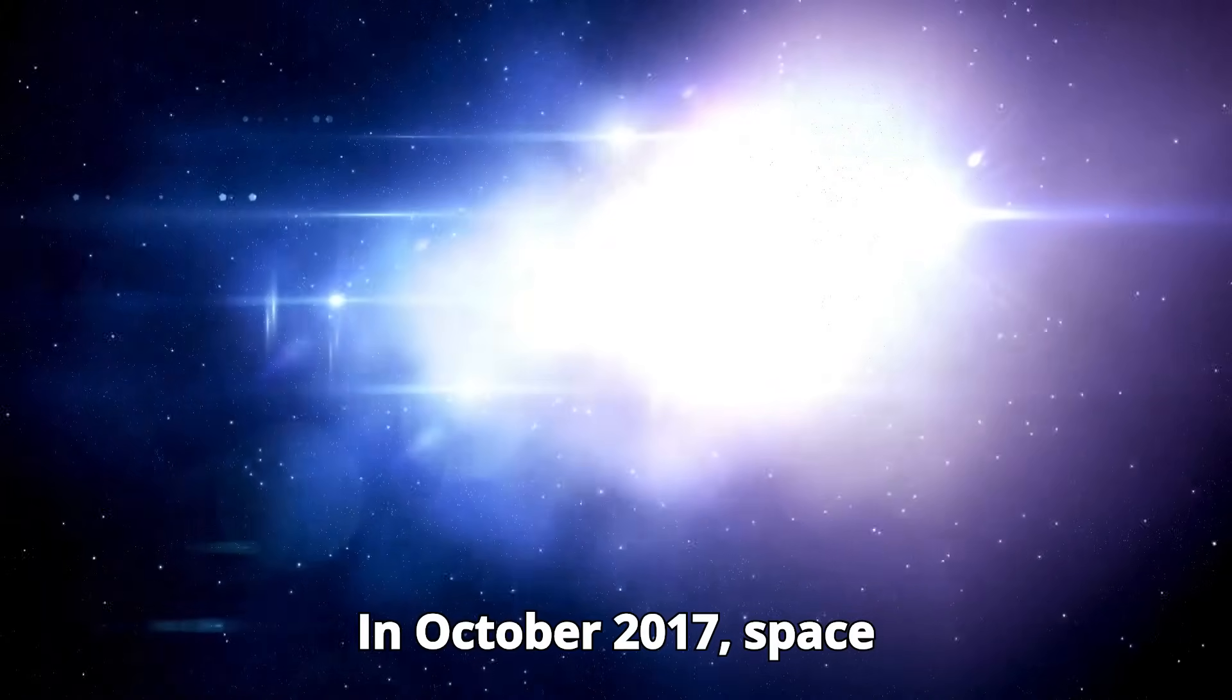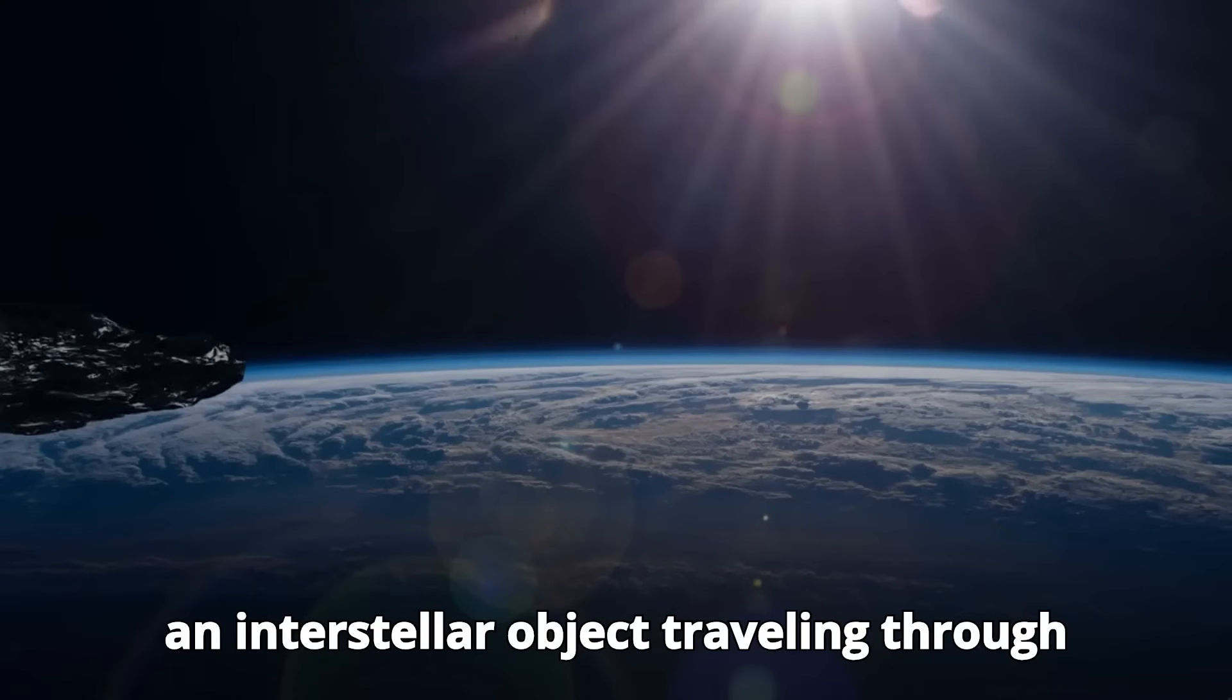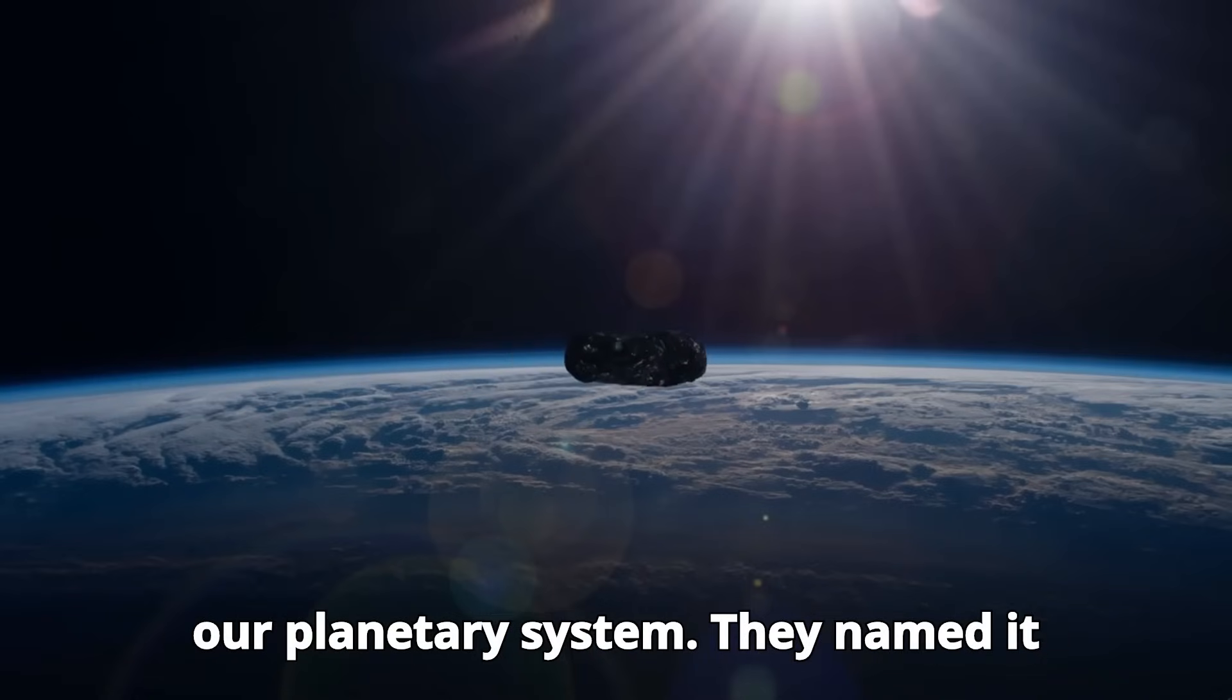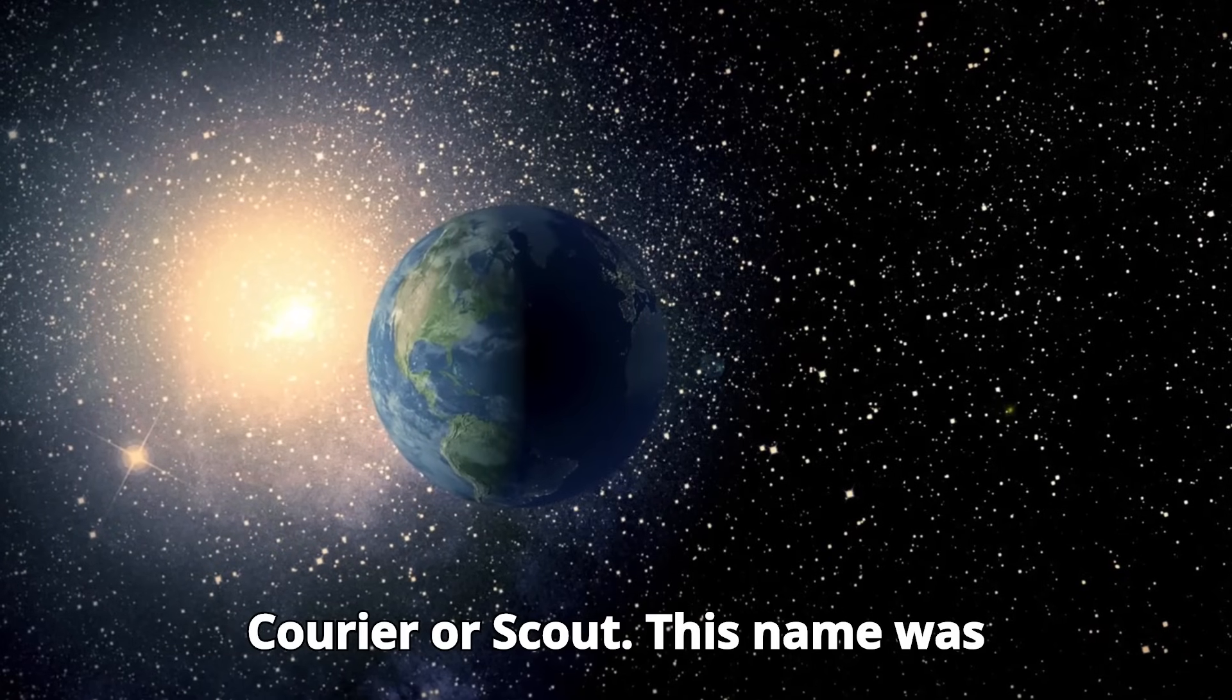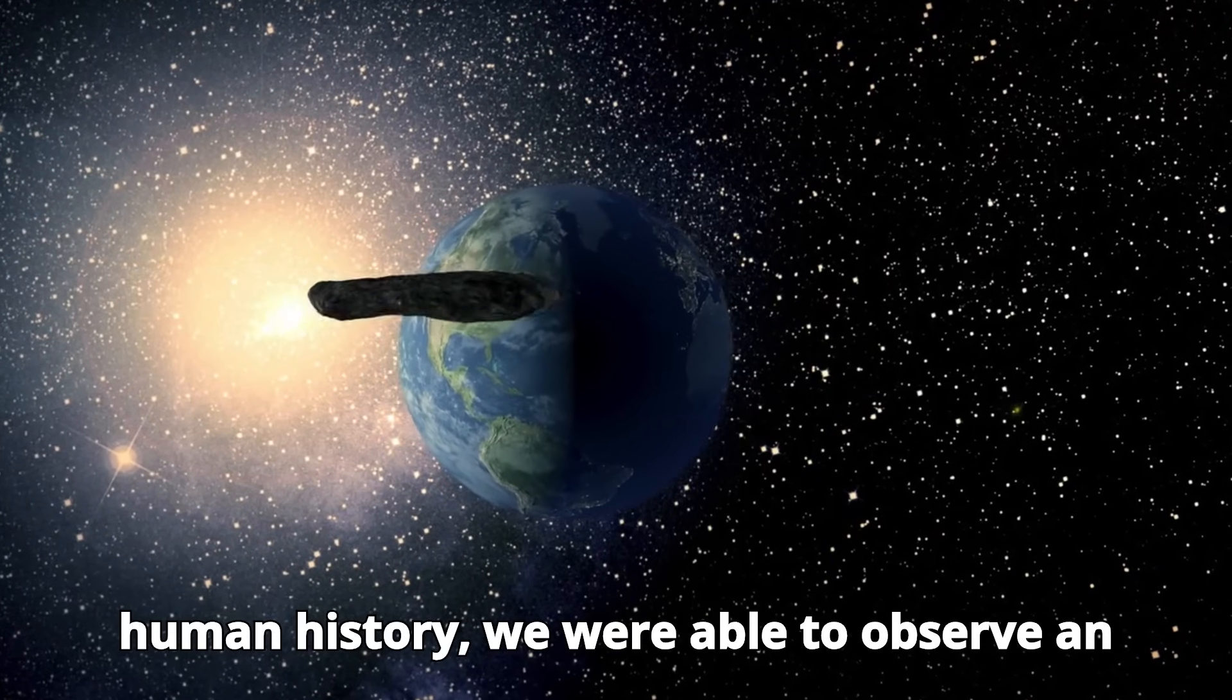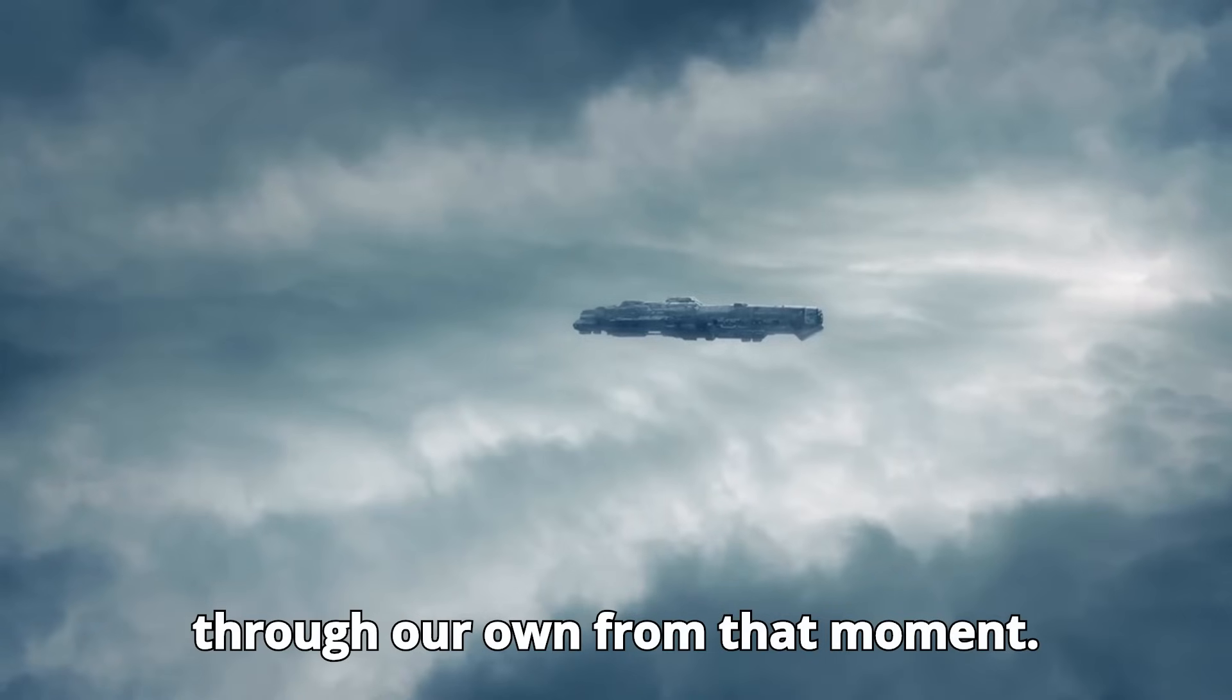In October 2017, space experts recognized something phenomenal, an interstellar object traveling through our planetary system. They named it Oumuamua, which in Hawaiian means courier or scout. This name was fitting because, for the first time in human history, we were able to observe an object from another star system passing through our own.